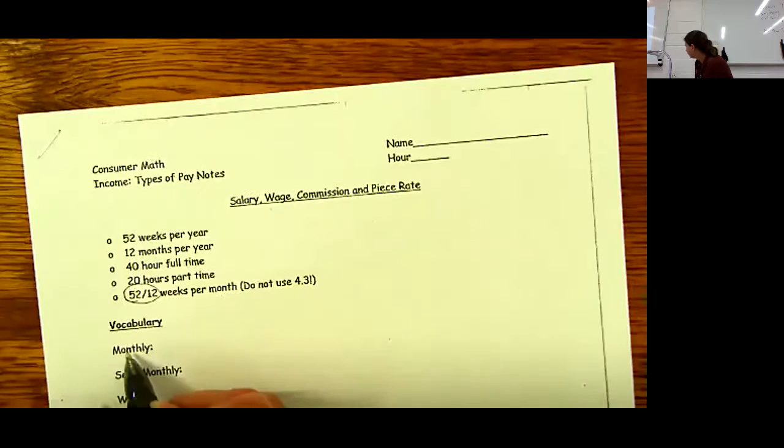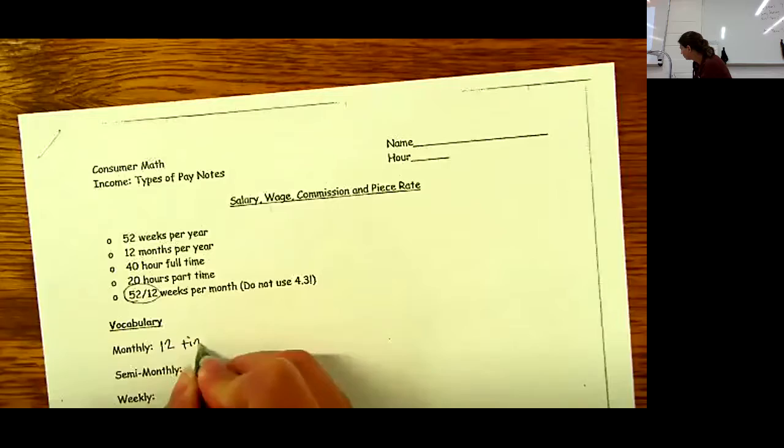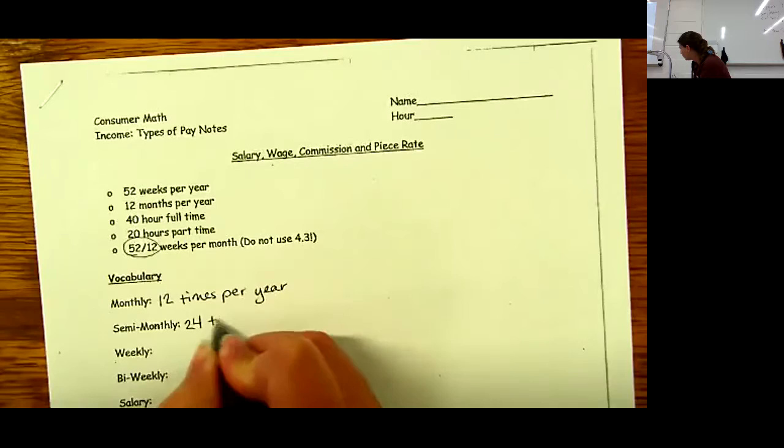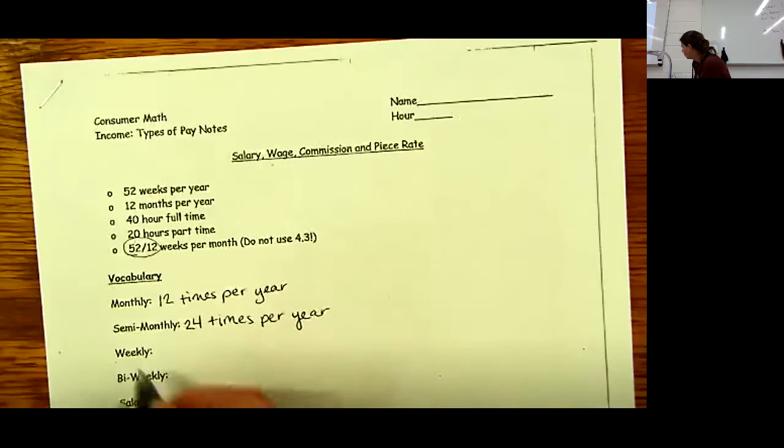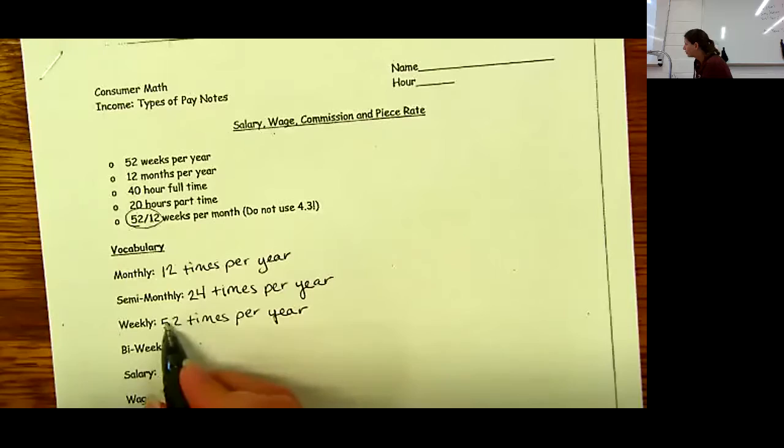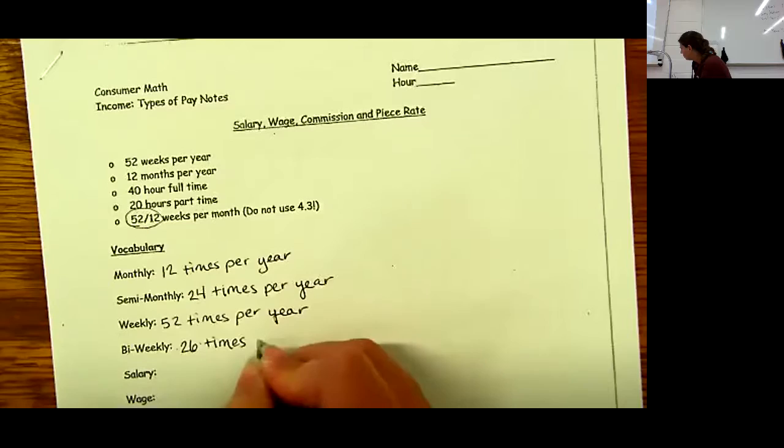Some other vocabulary is monthly, which is 12 times per year. If you get paid semi-monthly, that is twice a month, so 24 times per year. Weekly would be 52 times per year. And then bi-weekly, you would think that's twice a week, but that's actually not what it is. It's every other week, so that would be 26 times per year.